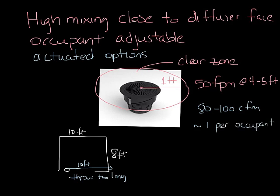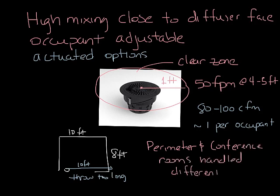Areas of varying load, like the perimeter or conference rooms, are handled a little differently. These areas often have fan-powered boxes or other equipment that helps handle the higher loads. We'll cover this at a future podcast.